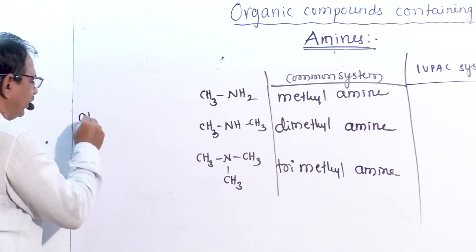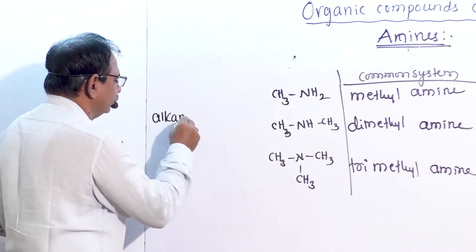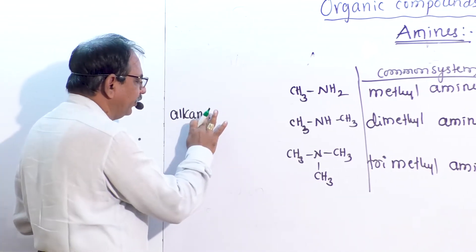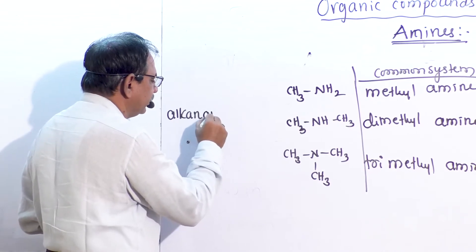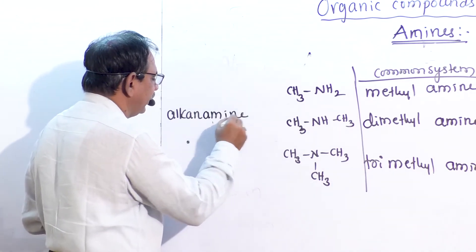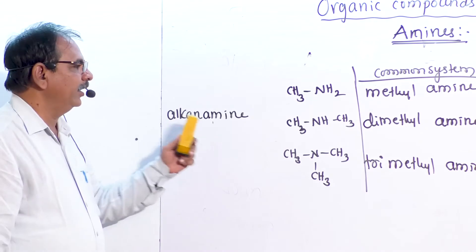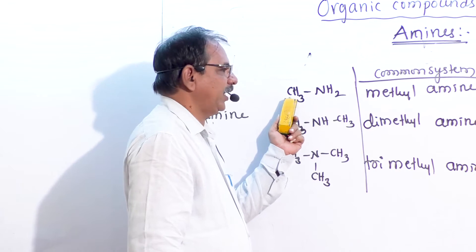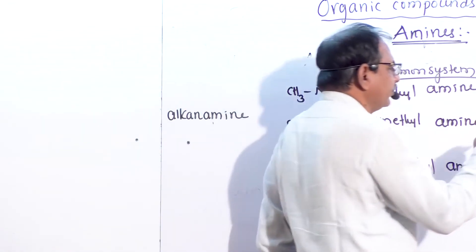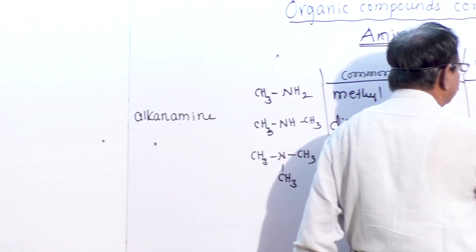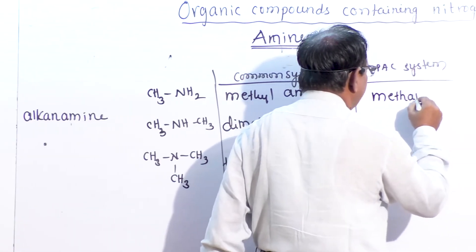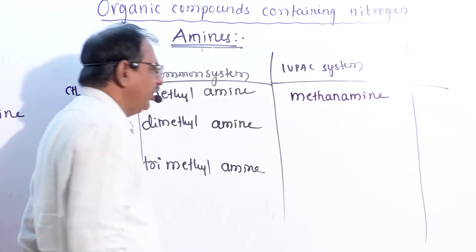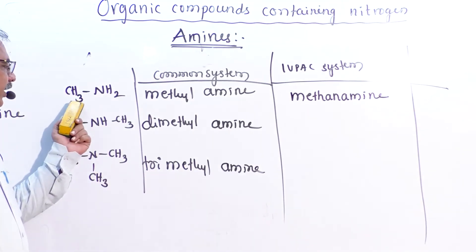In the IUPAC system, the name of the alkane present in the amine is taken, and the terminal 'e' of alkane is replaced by 'amine,' giving 'alkanamine.' For example, CH3NH2 contains one methyl group, so it is called methanamine.